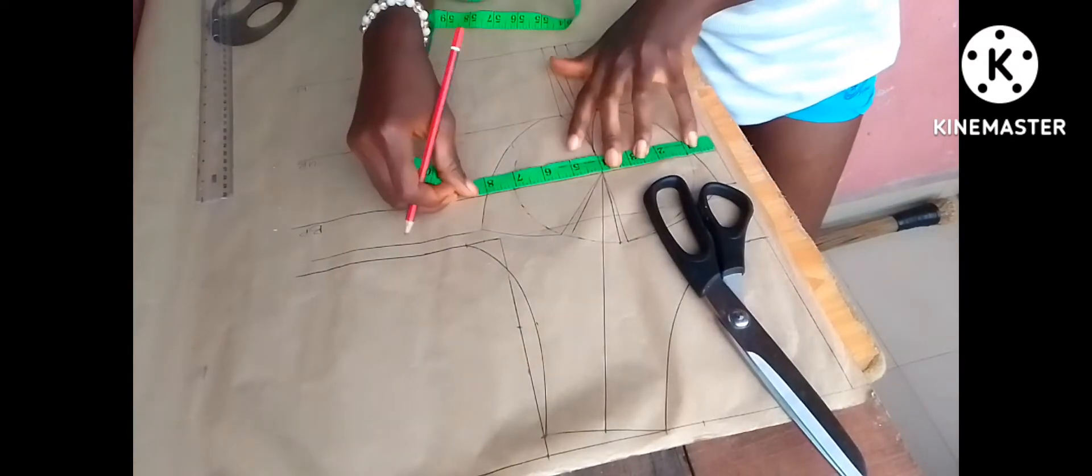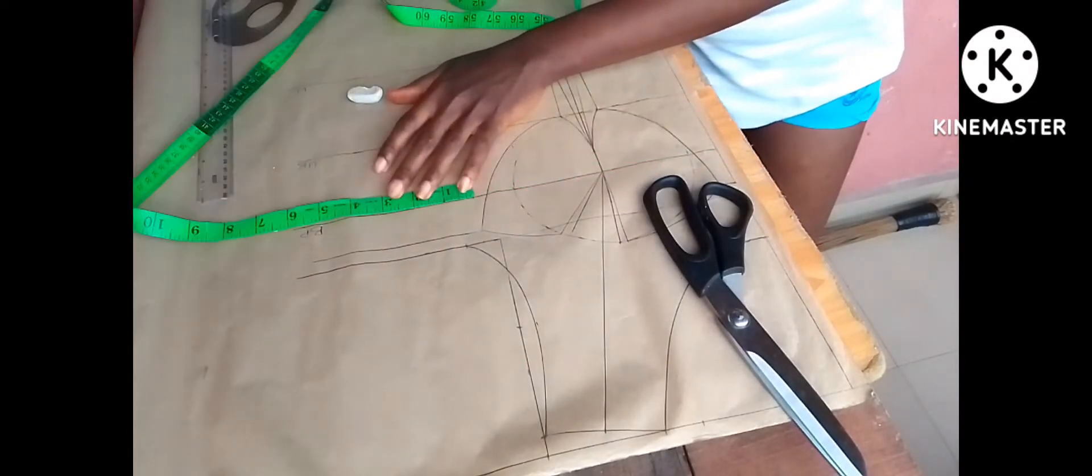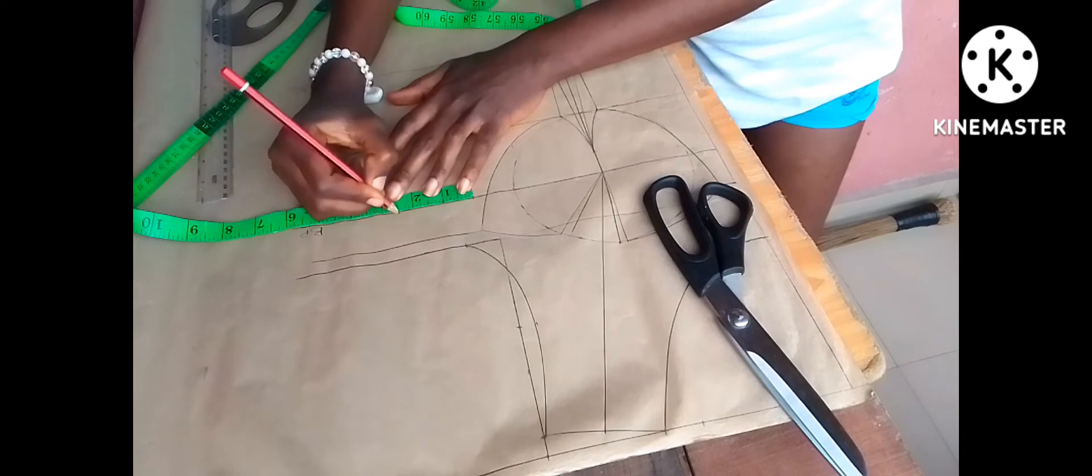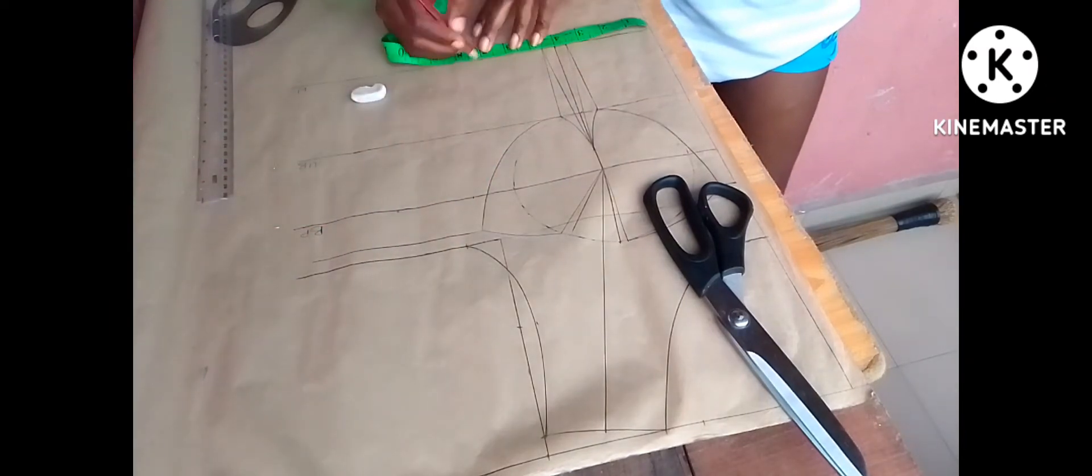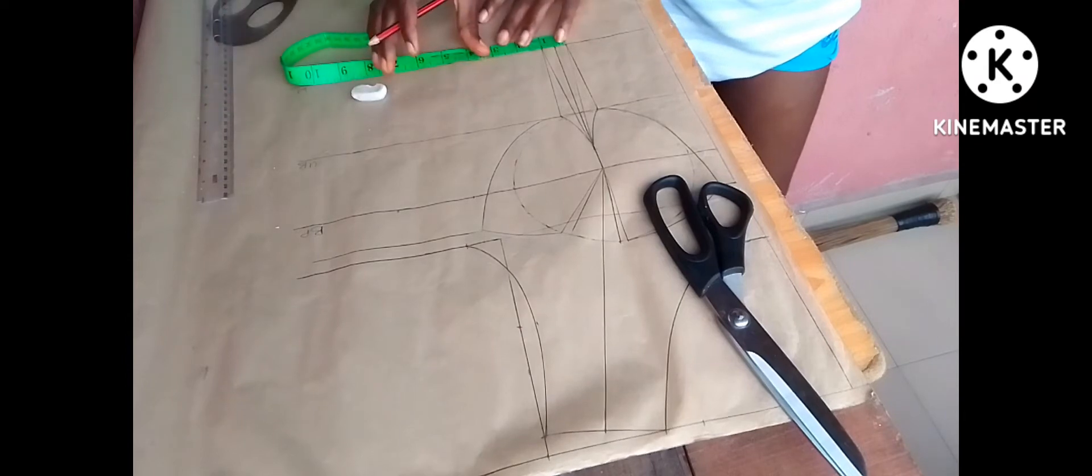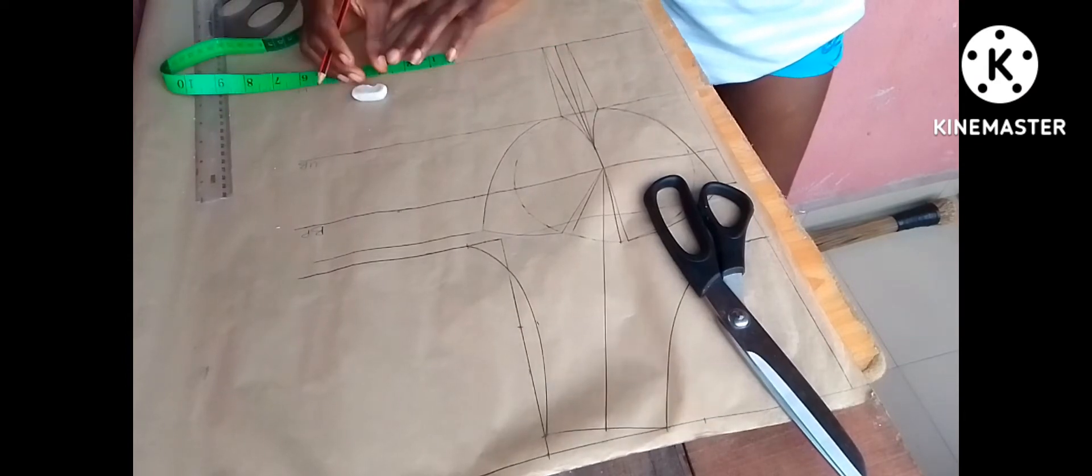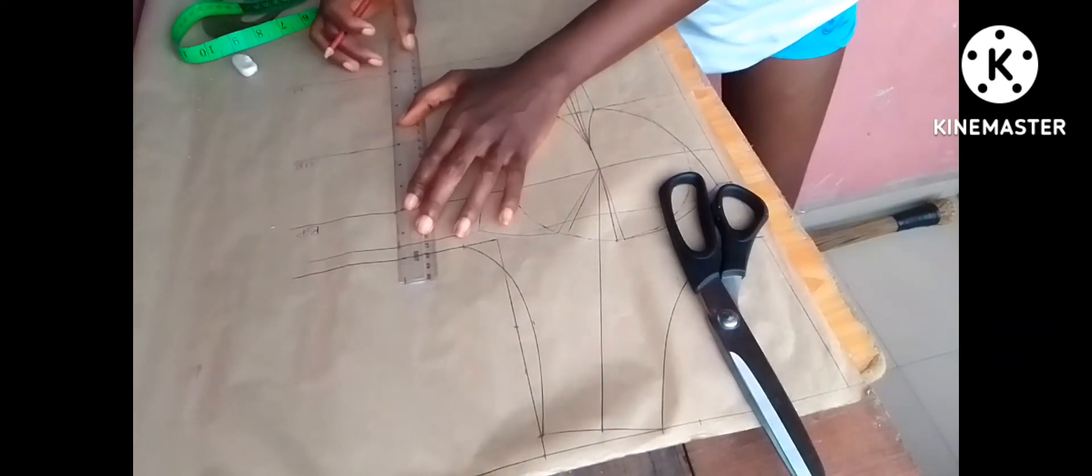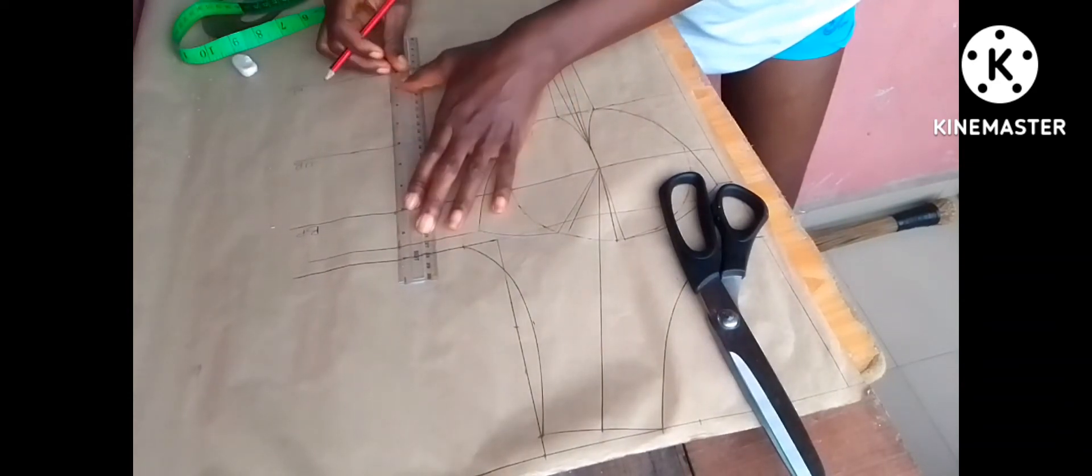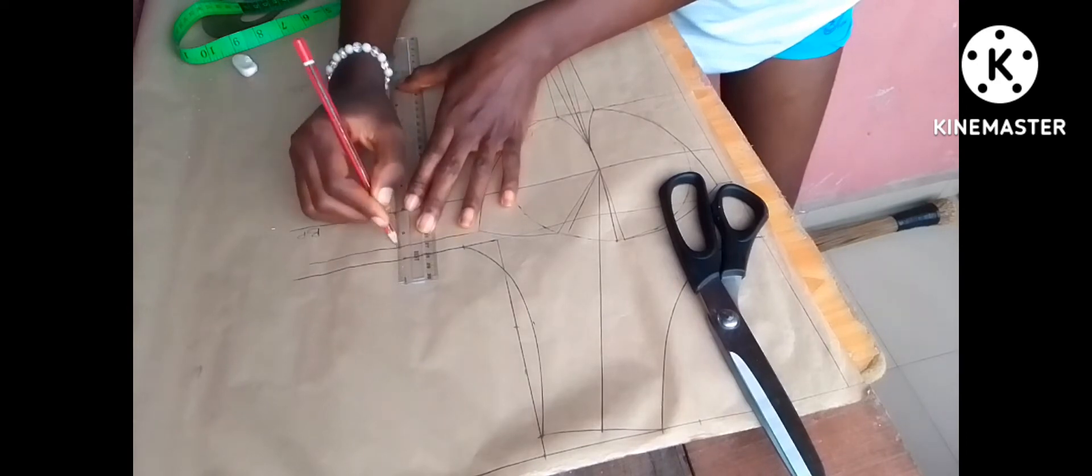So now I divided my bust into four. What it gave me, I added 2.5 inches allowance. Now on my waist, I divided my waist into four. Then whatever I have in between this my dart, I have one inch there. I replaced it and I also added my extra 2.5 inch allowance. Then I connected the two lines.